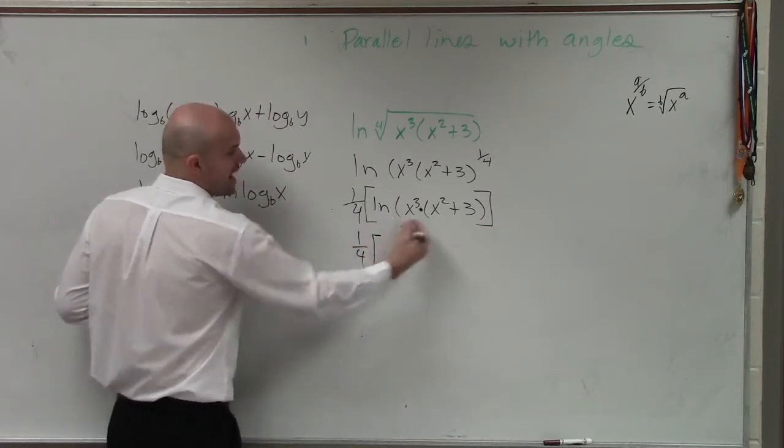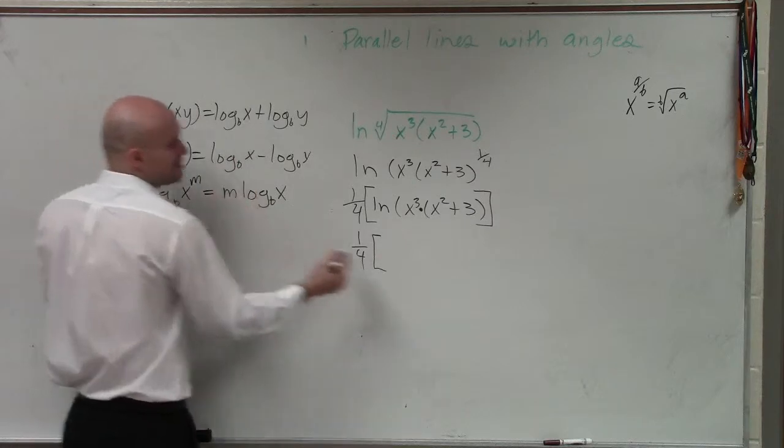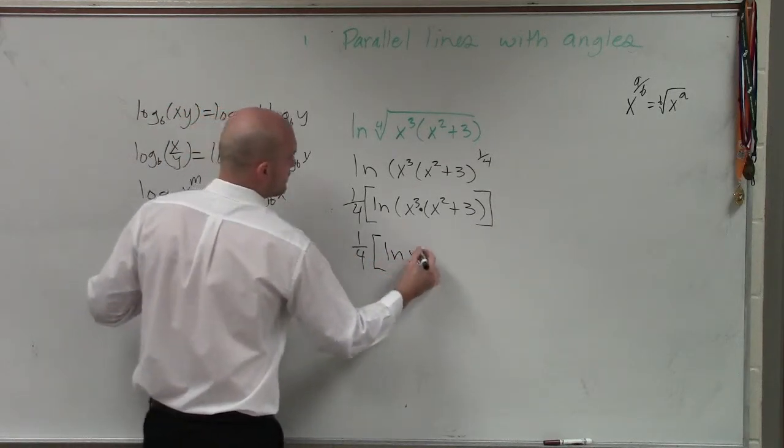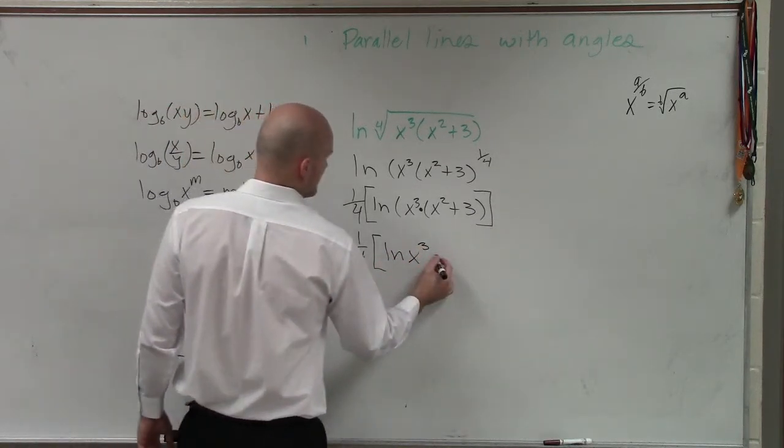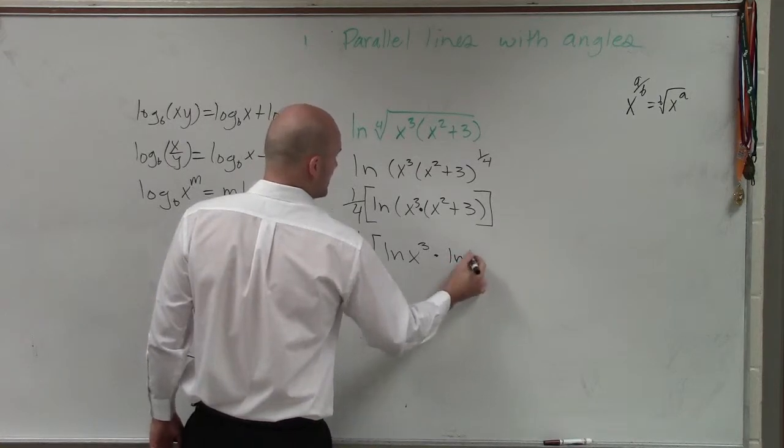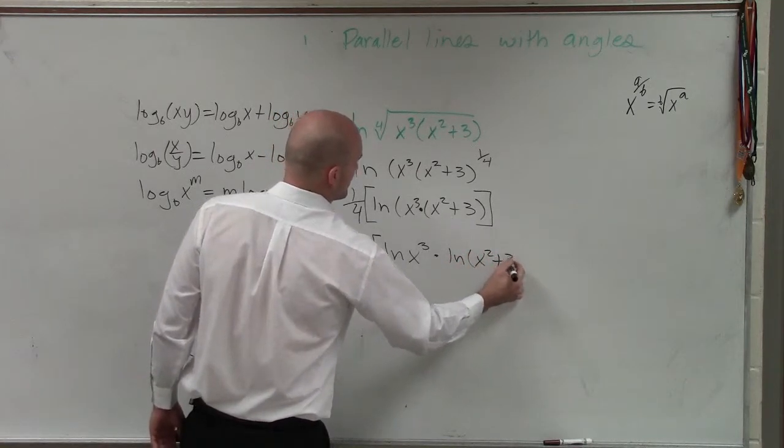So multiply everything. Now I rewrite the product by using addition. So it would be one-fourth ln of x cubed plus one-fourth ln of x squared plus 3.